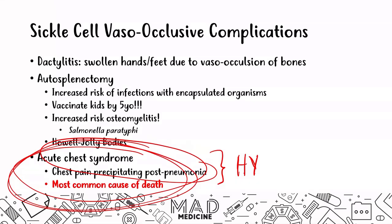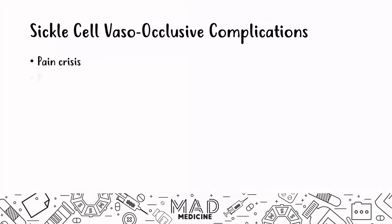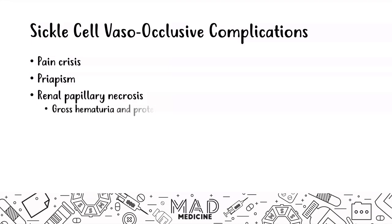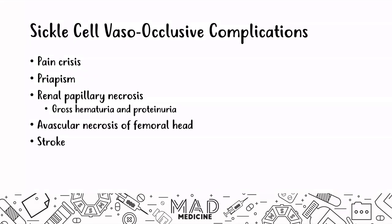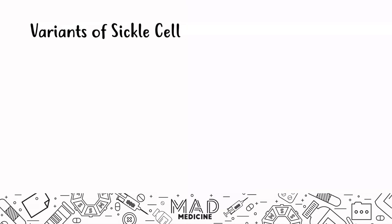Other complications include pain crisis, priapism, renal papillary necrosis with gross hematuria and proteinuria, avascular necrosis of the femoral head, and strokes. There are also variants of sickle cell disease and hemoglobin C disease to know about.